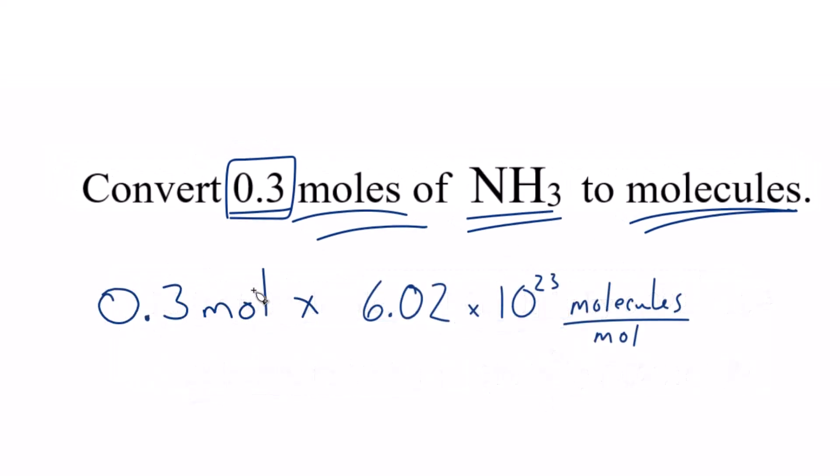So we have our 0.3 moles from the problem, and this is Avogadro's number. Note that we have 6.02 times 10 to the 23rd molecules in one mole. That's the definition of Avogadro's number.